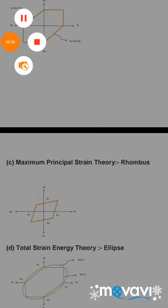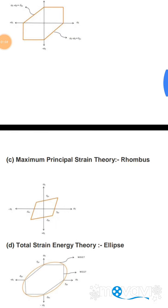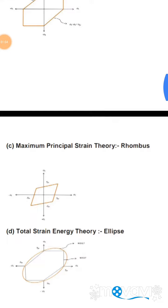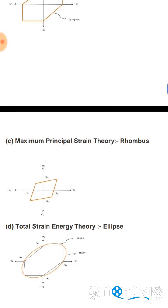D) Total Strain Energy Theory — Haigh's Theory — has the failure shape as an ellipse. E) Maximum Distortion Energy Theory — von Mises Yield Criterion — has the failure shape as an ellipse, and this theory is widely accepted for ductile materials.